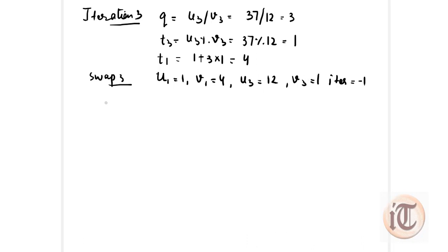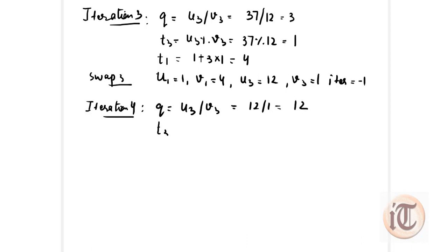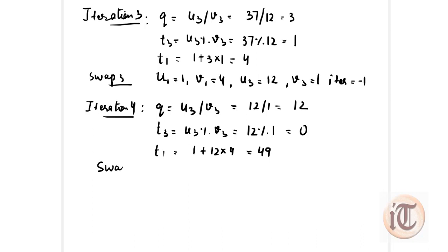v3 = 1, not equal to 0, so we iterate a fourth time. q = u3 / v3 = 12 / 1 = 12. t3 = 12 mod 1 = 0. t1 = 1 + 12 × 4 = 49. After swapping: u1 = 4, v1 = 49, u3 = 1, v3 = 0, and iteration = 1.